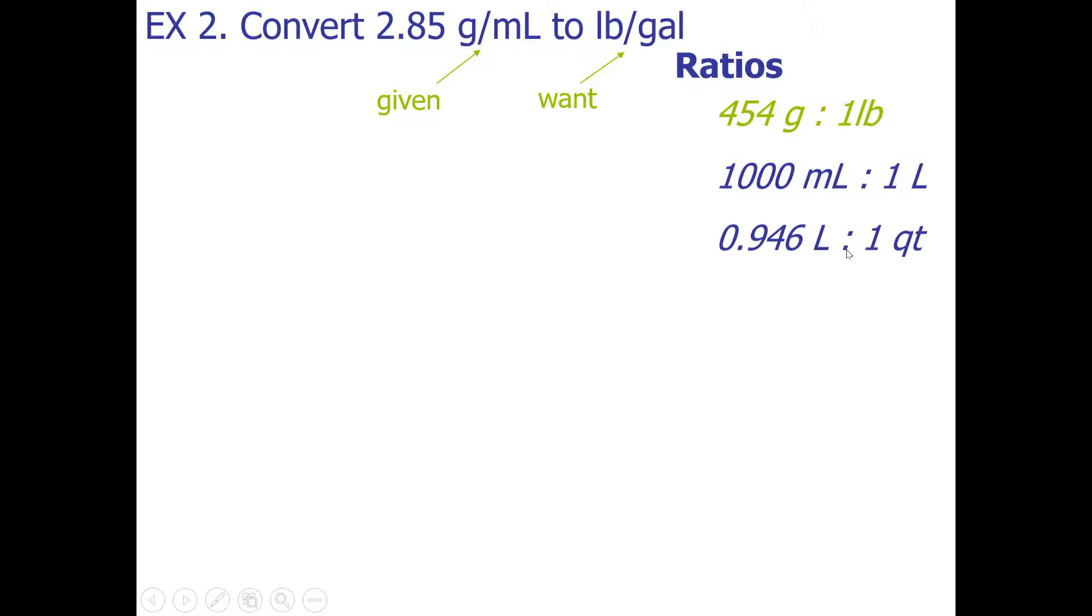All right, now that we have all of our ratios, let's start the problem. We start with the given. In this case, not given over one, since we have a combo unit that we're starting with: 2.85 grams per milliliter.